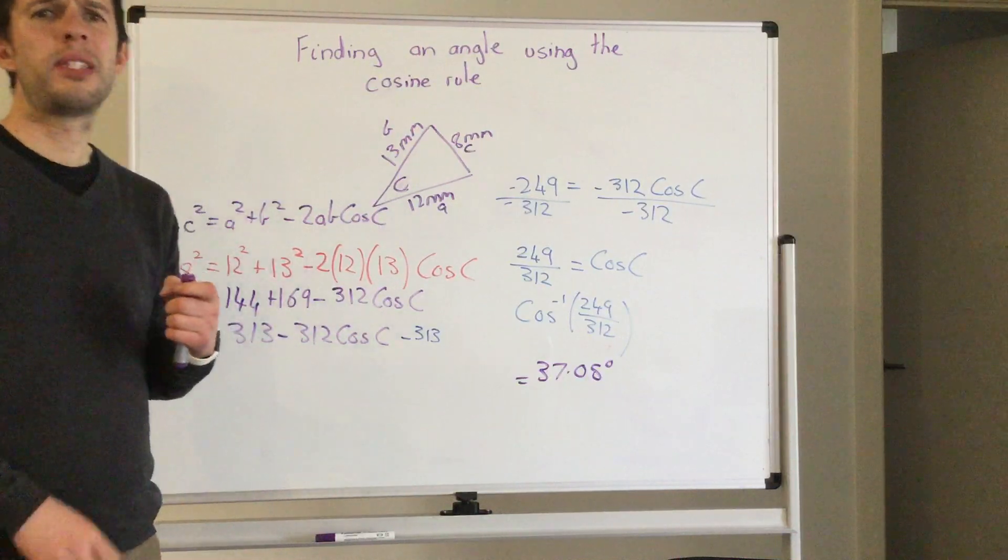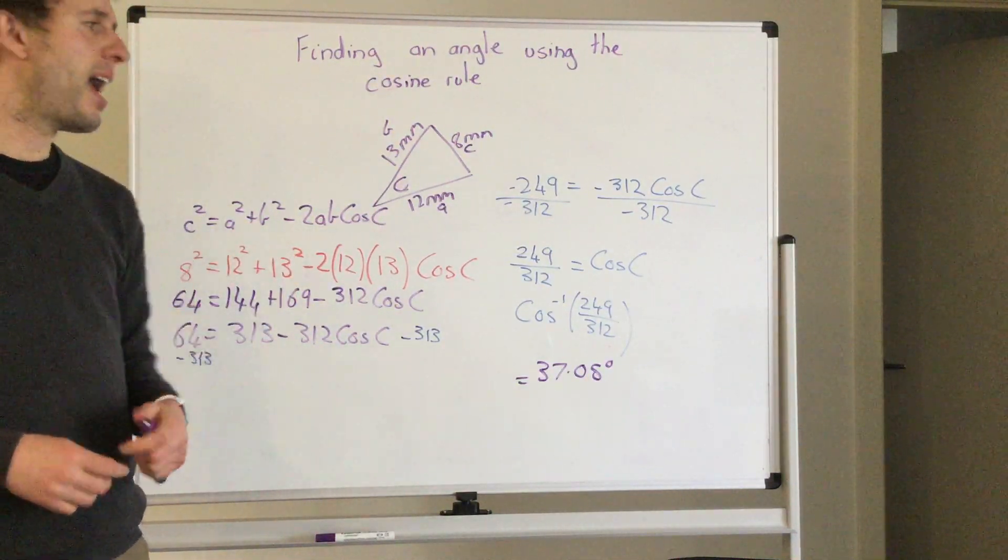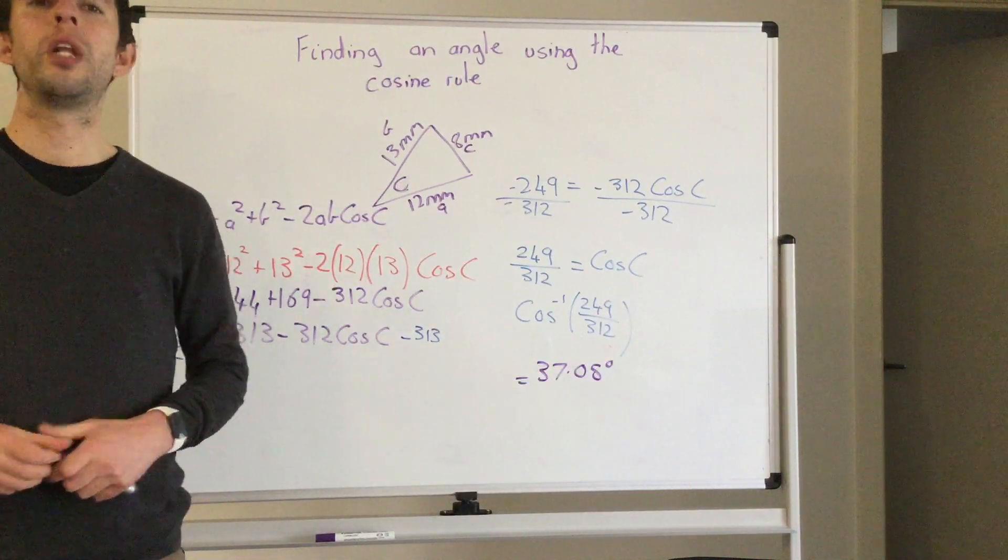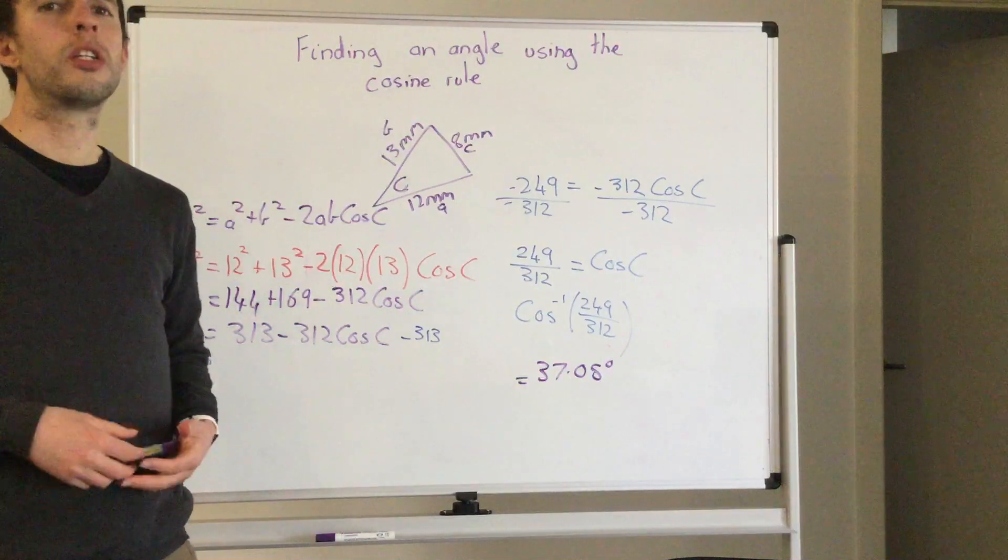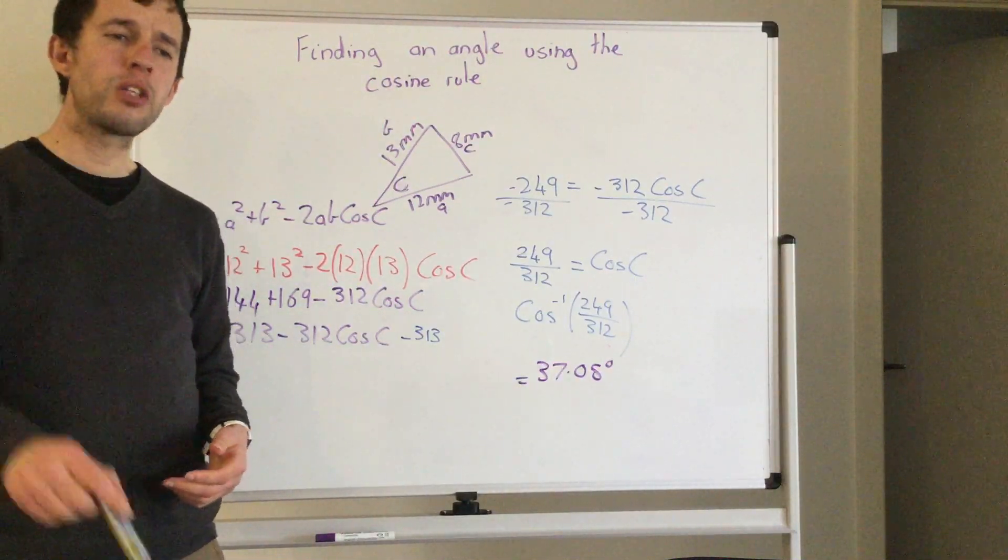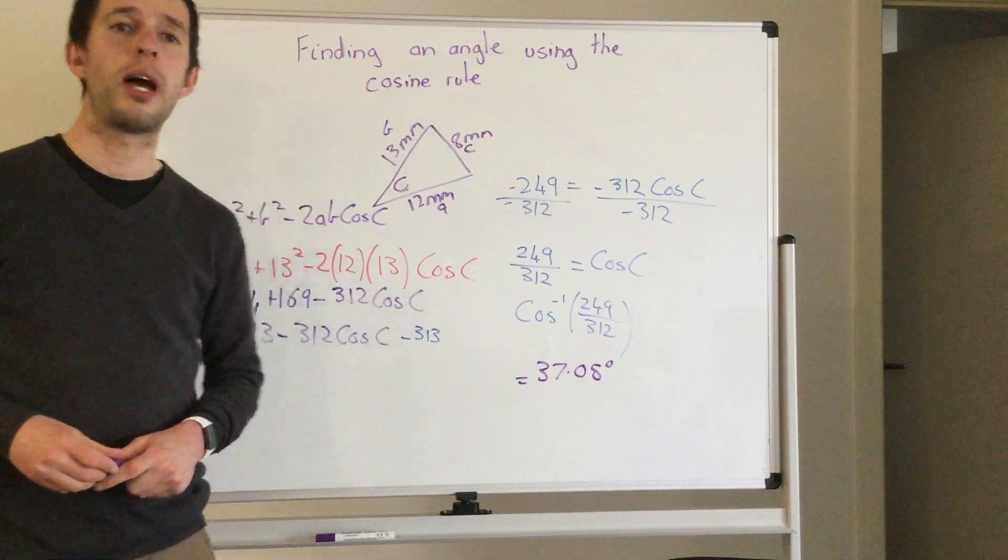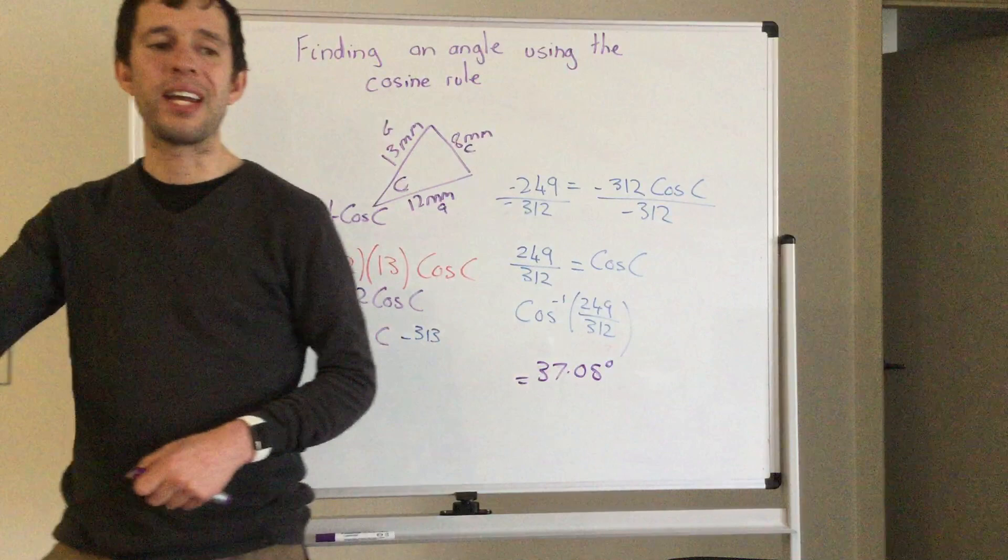So it really comes down to using algebra to solve with this equation and substituting. Really hope that helps you understand how to find an angle using the cosine rule. If you need any extra help, please message me, and make sure that you've had a look at the cosine proof because that will help you really understand this formula and get it in your head.